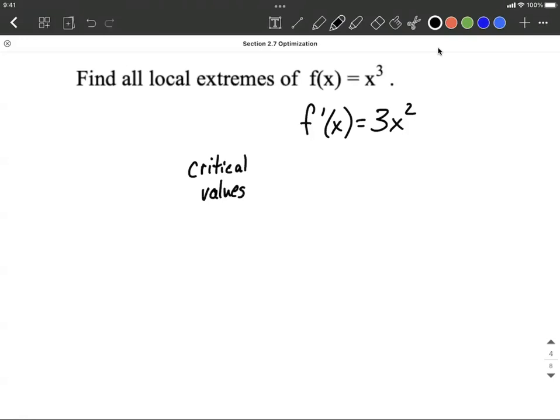All right, critical values or critical numbers. Now these occur whenever the derivative is either equal to 0 or undefined. So I'm going to set ours equal to 0. Now you can visualize this as already being factored if you want, or you can do a few steps here and isolate x on one side all by itself. Apply a square root to both sides, and we get x = 0 as a critical value.